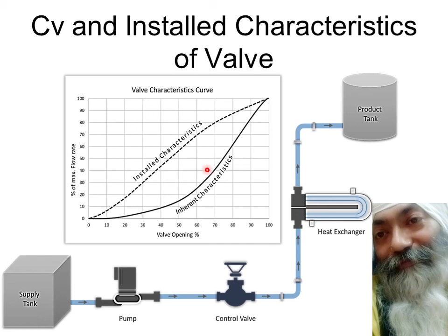The idea is to give you two things: number one, what is the difference between installed characteristics and inherent characteristics — in industry we use installed characteristics, while in lab we use inherent characteristics. Second, why is the equal percentage valve preferred over the linear valve — because the installed characteristics of the equal percentage valve are almost linear. That is the reason we go in for equal percentage valve instead of a linear valve.